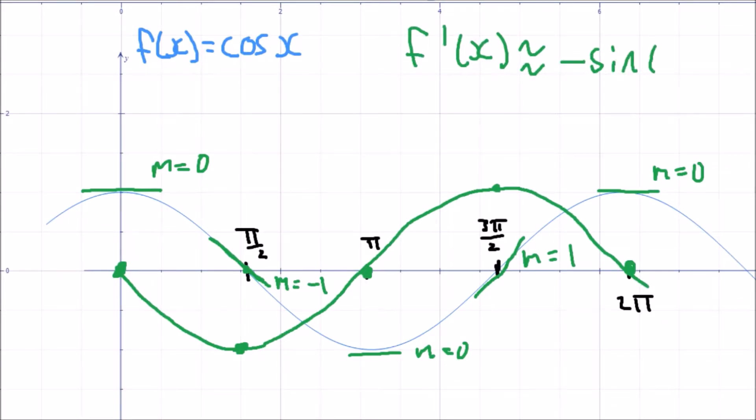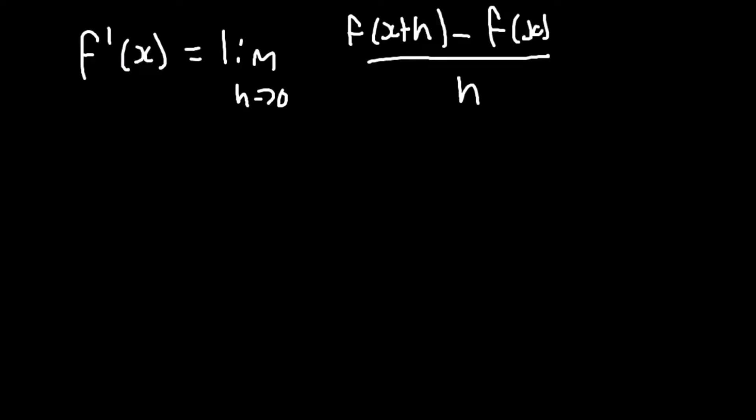So let's write out the derivative for sine of x using the classic h approaches zero limit. In the limit, which is the limit as h approaches zero, sine x plus h minus sine x over h.